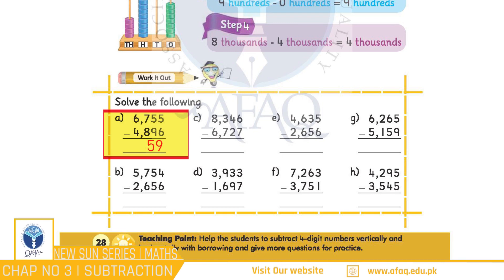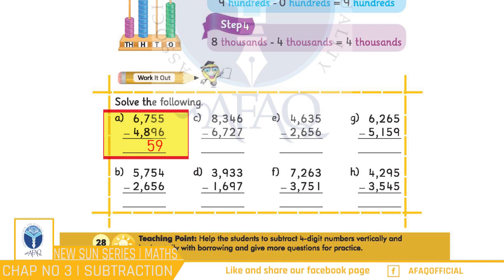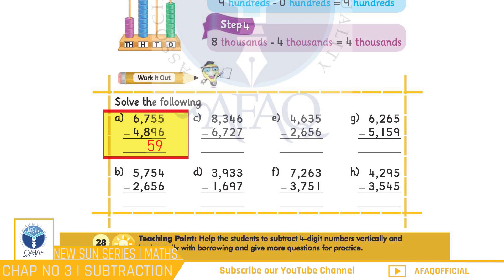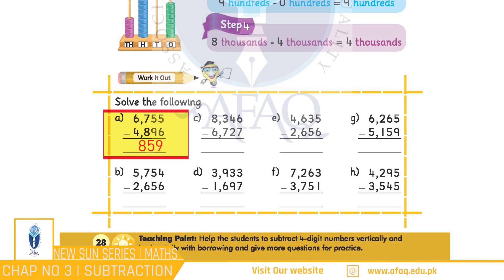Aur iske baad 100s place par maujood 600 mein se 800 ko subtract karna hoga. Bacchiyon, kyunki 6, 8 se chhota hai, hum 8 ko 6 mein se subtract nahin kar sakte. Isliye hamein 6000 mein se 1000 yani 600 ko borrow karwana hoga jis ki wajah se 600, 1600 mein tabdeel ho jayenge aur 1000s place par 5000 reh jayenge. Aur iske baad 100s place par maujood 1600 mein se 800 subtract kar denge jiska jawab hoga 800. Aur 1000s place par maujood 5000 mein se 4000 subtract kiya jayega jiska jawab hoga 1000. Is tarike se hamara mukammal jawab banta hai: 1,859.